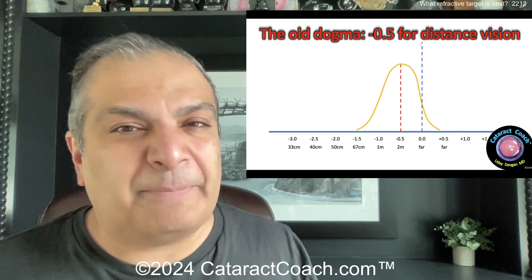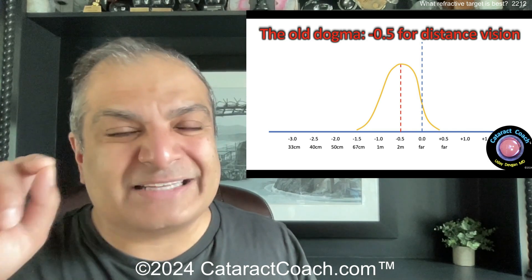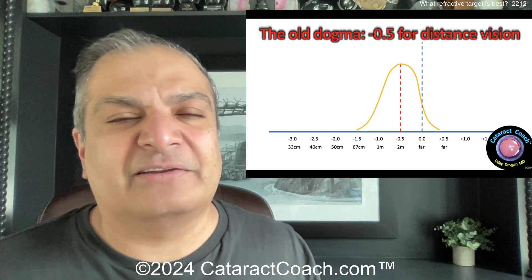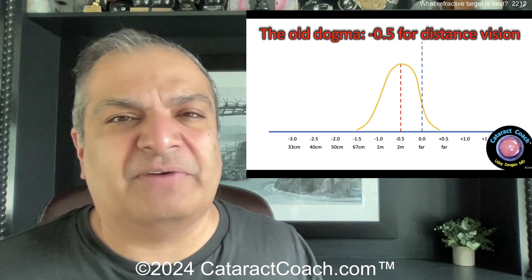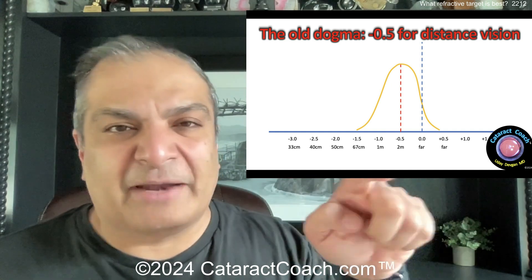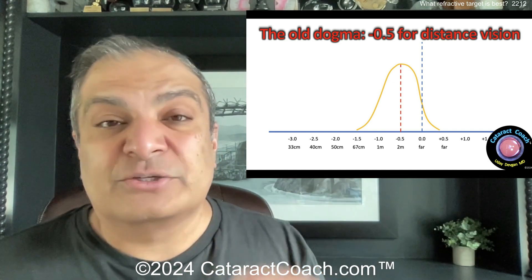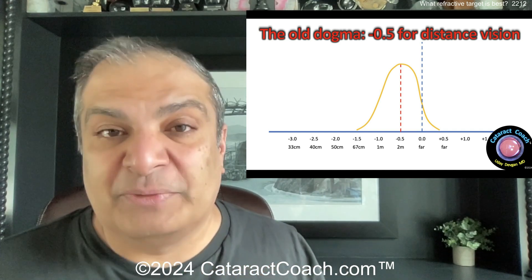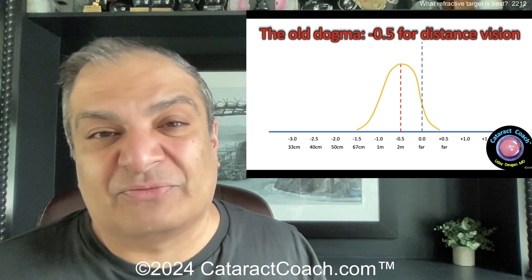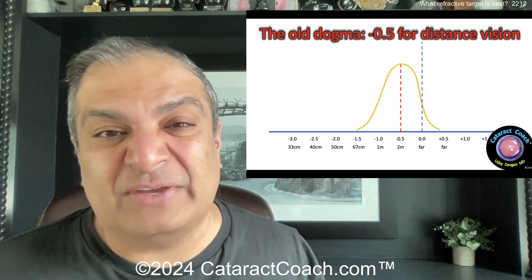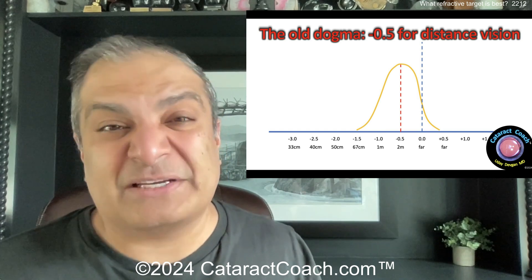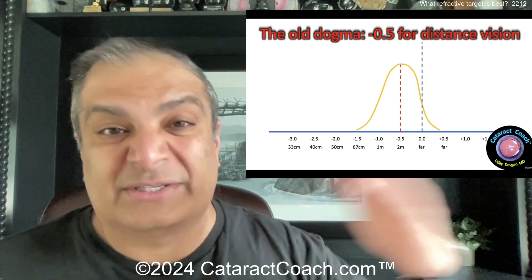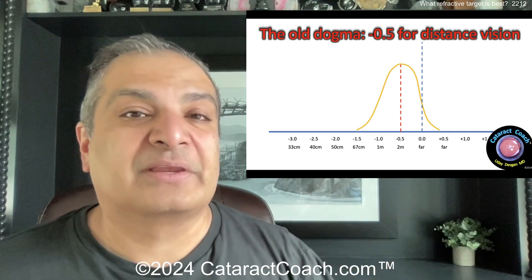We've since changed that thinking, because we know patients who end up minus 0.5 may not be the happiest if they want really sharp distance vision. Think about it: what's the refractive focal point of minus 0.5? One divided by 0.5 equals two — so two meters. If you leave a patient at minus 0.5, the optimal focal point is two meters away, which for my American friends is a little more than six feet. That's not ideal if you want true distance vision, which we consider 20 feet or beyond — or six meters or beyond.